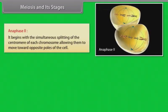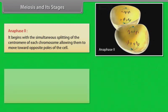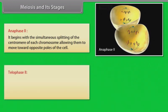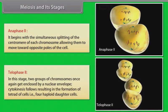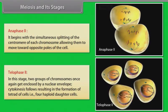Metaphase II is followed by anaphase II. Anaphase II begins with the simultaneous splitting of the centromere of each chromosome, allowing them to move toward opposite poles of the cell. The last stage of meiosis is telophase II. In this stage, two groups of chromosomes once again get enclosed by nuclear envelope. Cytokinesis follows, resulting in the formation of tetrad of cells, that is four haploid daughter cells.